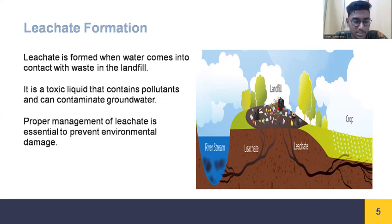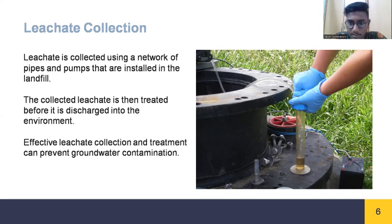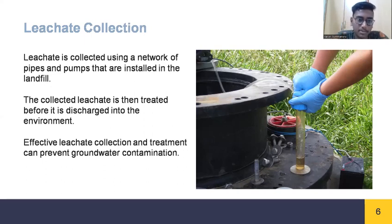Proper management of leachate is essential to prevent environmental damage. Leachate is collected using a network of pipes and pumps installed in the landfill, and it is then treated before being discharged into the environment. The most pressing environmental concern regarding landfills is the release of methane gas. As organic matter in a landfill decomposes, methane gas is released. Methane gas is 84 times more effective at absorbing the sun's heat than carbon dioxide. Effective leachate collection, management, and treatment can prevent groundwater contamination.